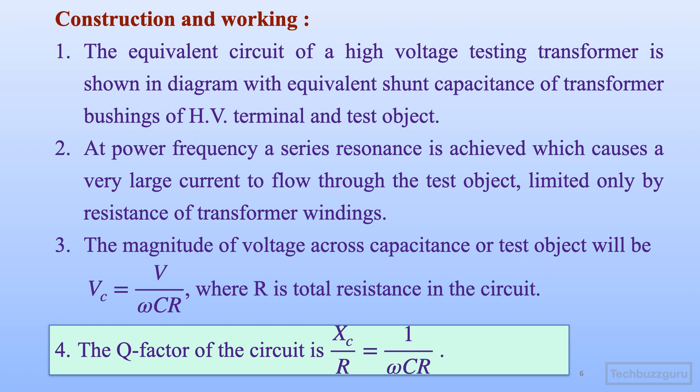The Q factor of the circuit during resonance is given by the standard equation: Q = Xc / R = 1 / (ω·C·R). This is the multiplying factor by which the voltage gets magnified across the test object. Therefore, Vc = Q × V — that is, (1 / (ω·C·R)) × V — so Q is the voltage multiplication factor.